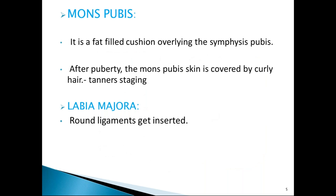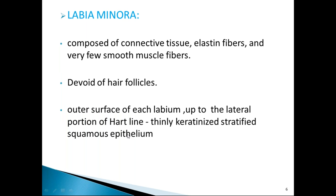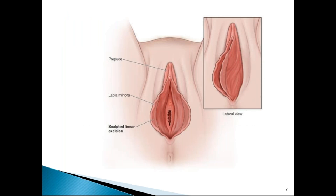The mons pubis overlies the symphysis pubis. After puberty, mons is covered with curly hairs where Tanner staging is given for secondary sexual characters. The labia majora are the two major folds where the round ligaments, which are the upper supports of the uterus, get attached to the labia majora. Labia minora are devoid of hair follicles and have an outer and inner surface separated by the Hart's line.